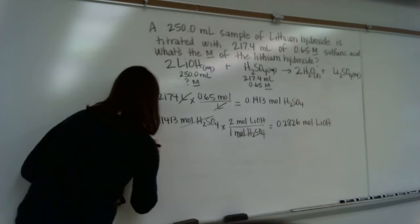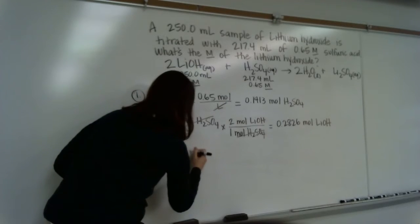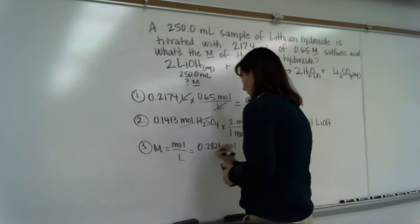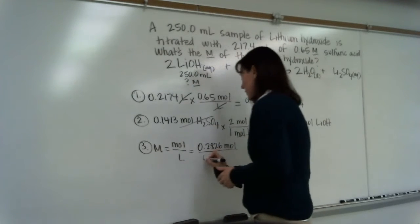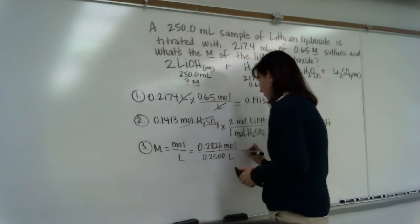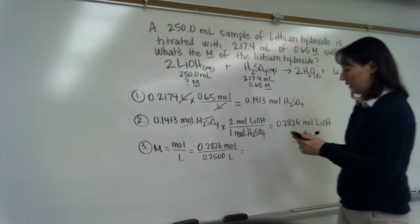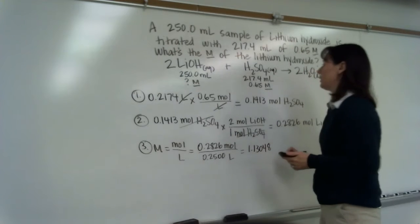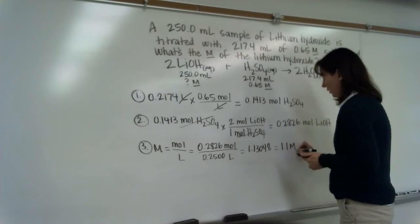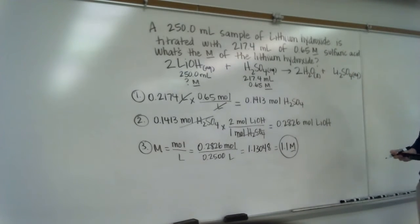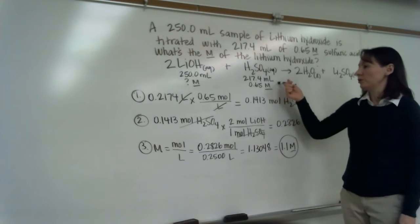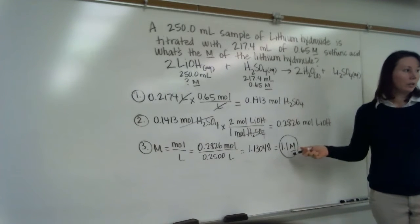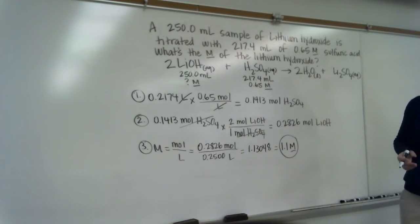Now do I have everything I need to solve for molarity? Yep, I do. Because molarity is moles over liters. Moles I just got from the previous step so 0.2826 moles and volume was given in the problem so that would be 0.2500 liters. So divided by 0.2500 and then my calculator spits out 1.13048. How many sig figs can I keep? Just two, so that's 1.1 molar. Is that still a reasonable answer? Yes, because you used less of this than this. Any questions on how we did this one?